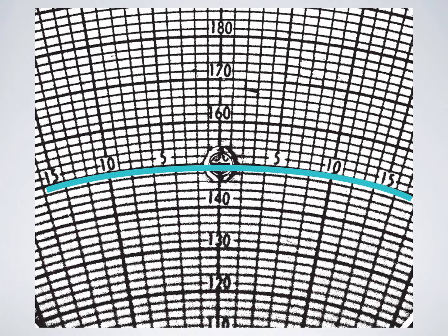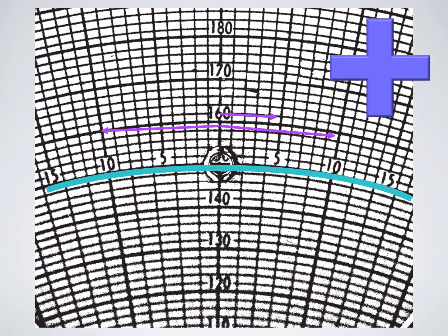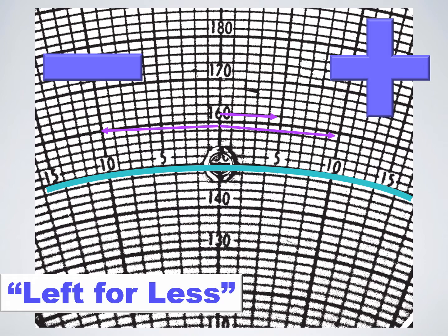Corrections to the right are a positive addition to your heading, whereas corrections to the left are a negative reduction in your heading. I usually try to think of left for less.